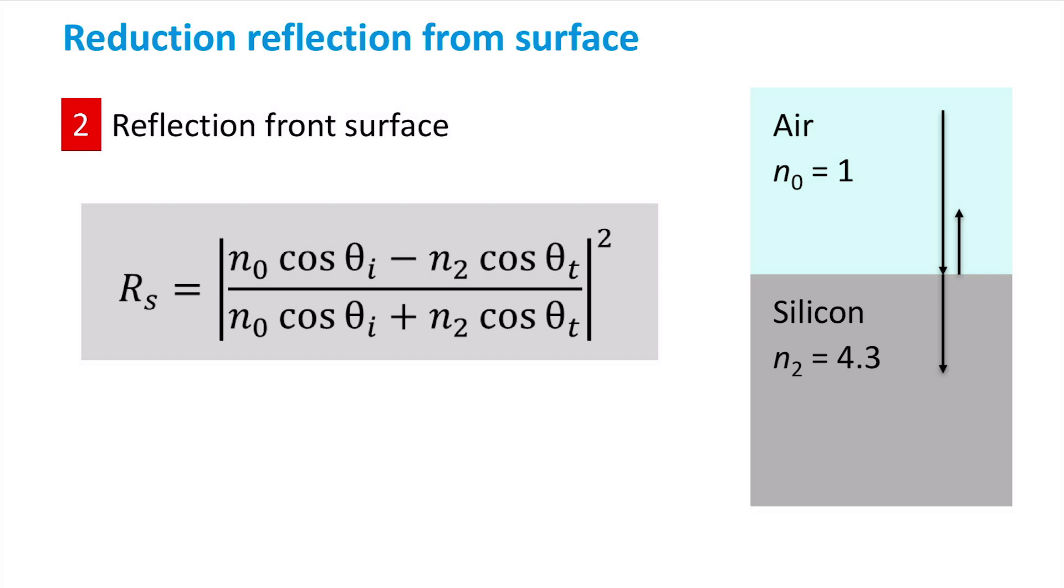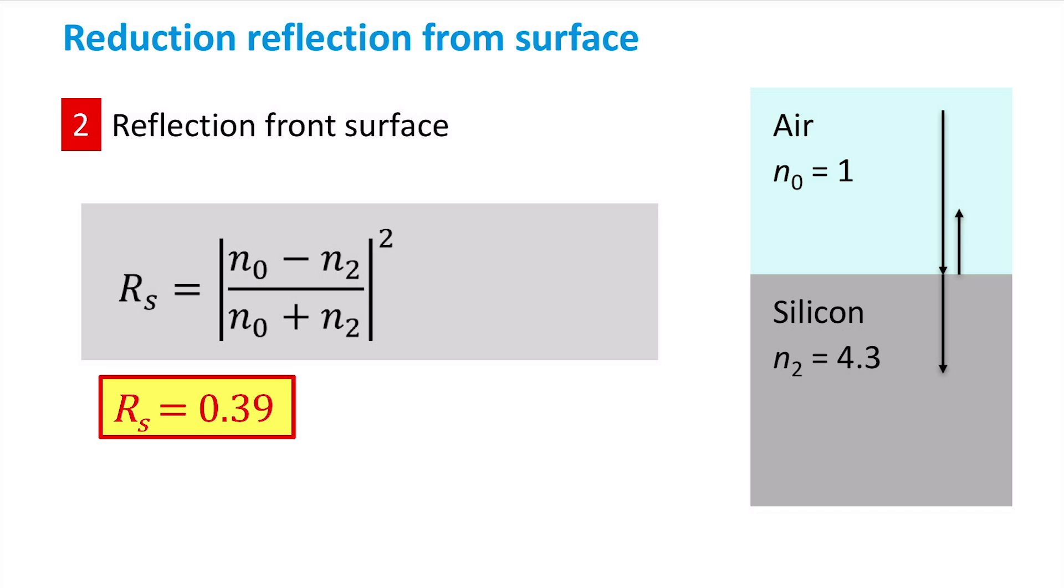The figure on the right shows a graphic representation of the interface between air and silicon with refractive indexes of 1 and 4.3 respectively. The Fresnel equation for the reflectance between medium 0 and 2 includes the refractive index of both media n0 and n2 and the angles of incidence and transmission theta i and theta t. If we consider that the light is incident normal to the surface, the cosine terms reduce to 1 and the expression becomes very simple. If we calculate the reflectance of the air-silicon interface, we arrive at a reflection of 39%. It is obvious that we need to design our solar cells such that this huge reflection is reduced.